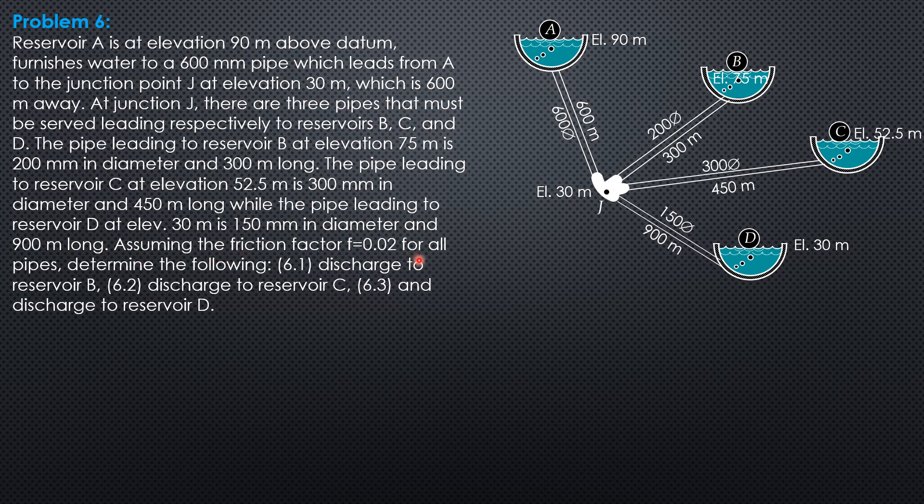Assuming the friction factor F = 0.02 for all pipes, determine the following: discharge to reservoir B, discharge to reservoir C, and discharge to reservoir D.